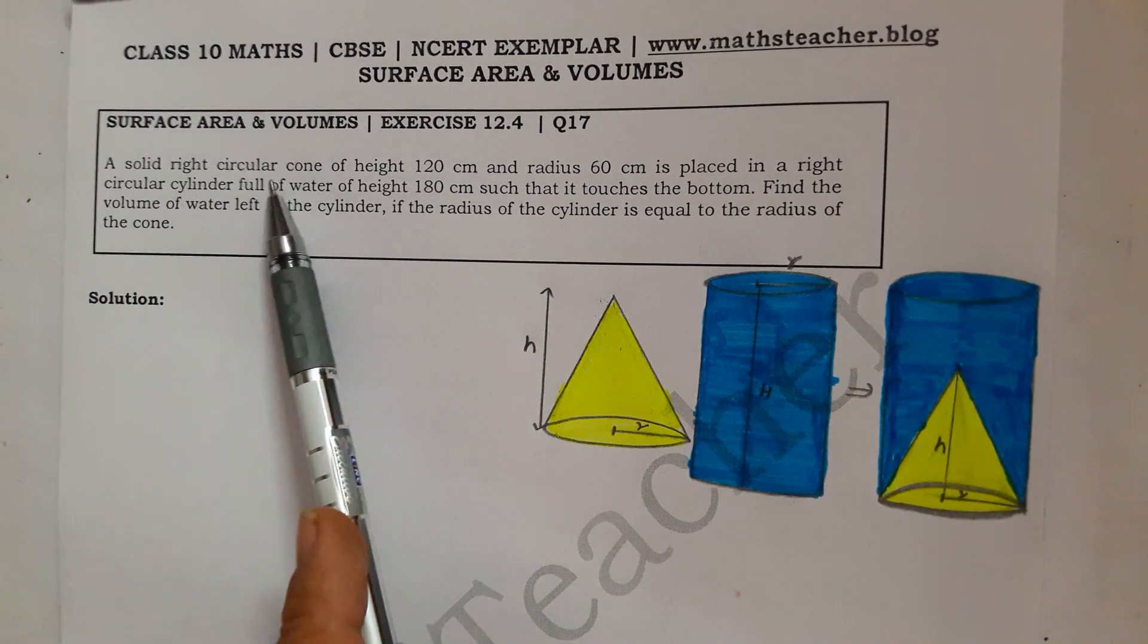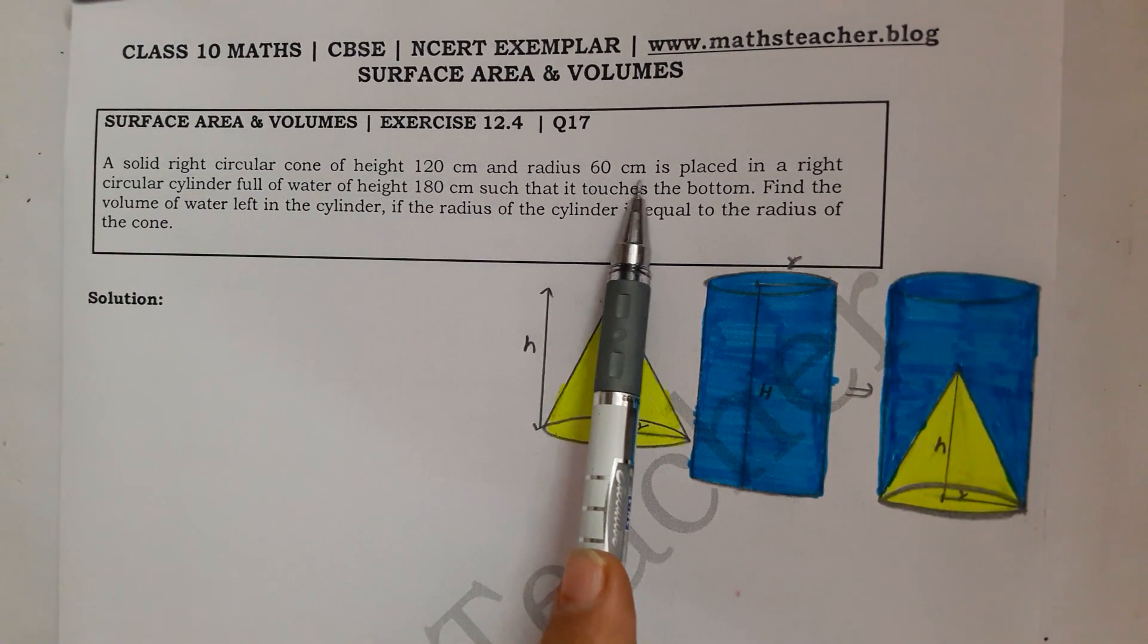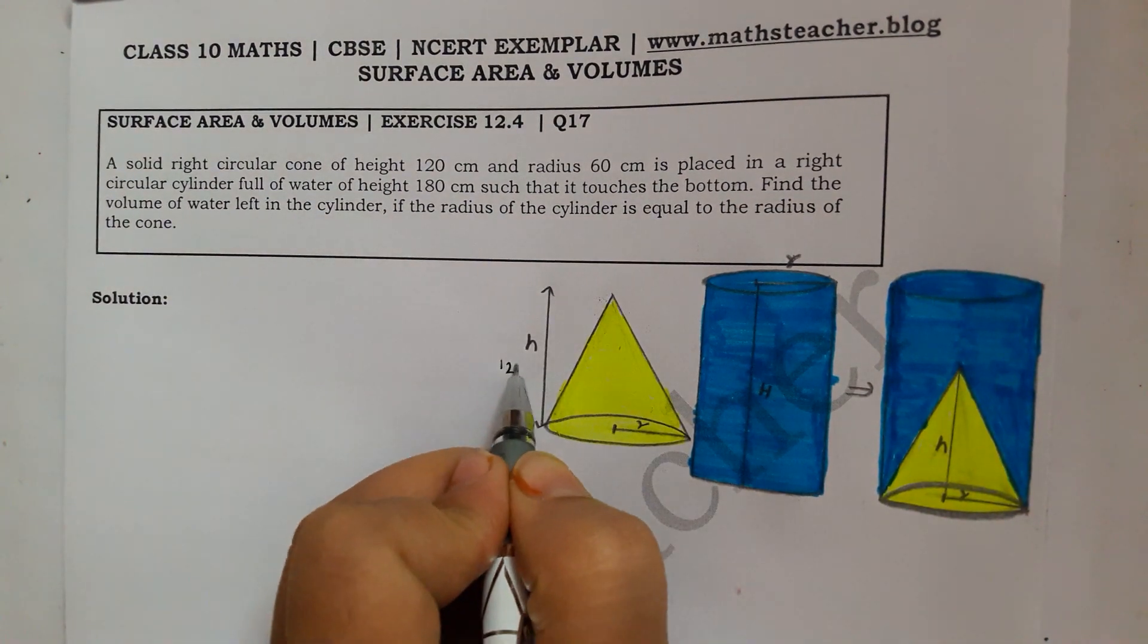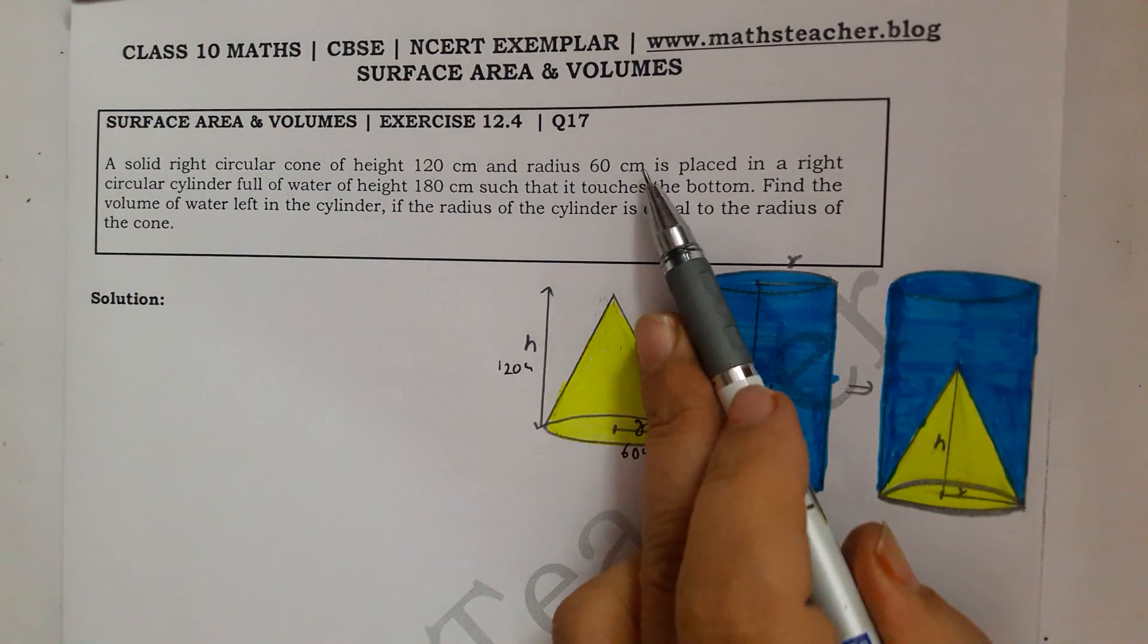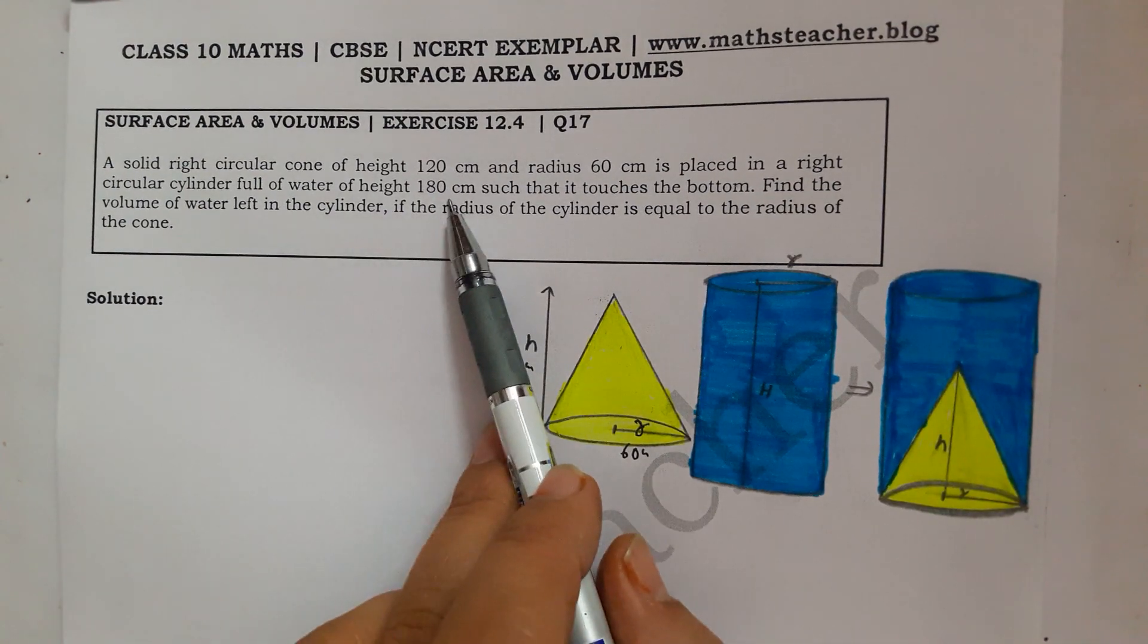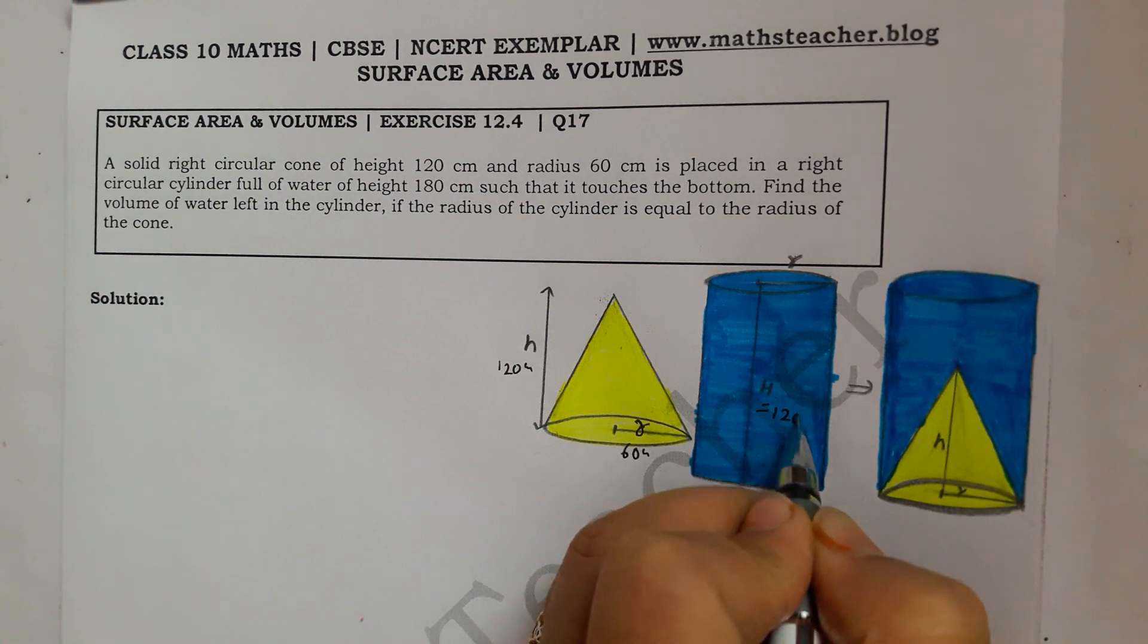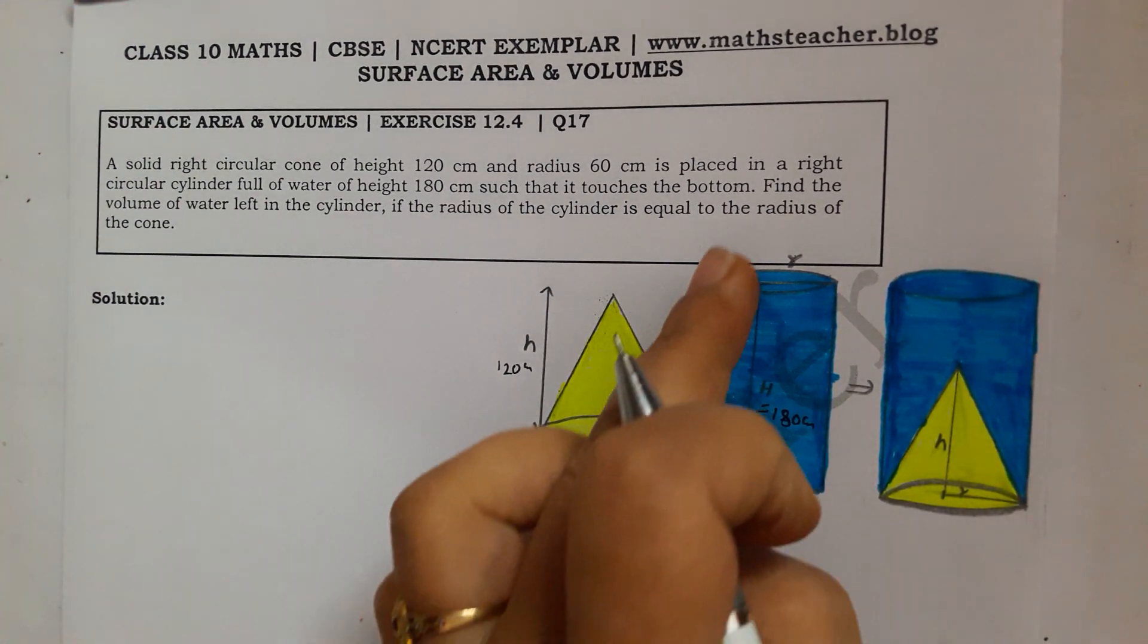A solid right circular cone of height 120 cm and radius 60 cm is placed in a right circular cylinder full of water of height 180 cm. So here's cylinder height 180 cm filled with water.